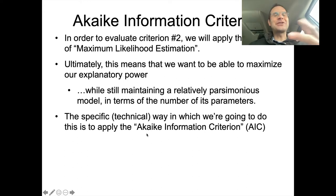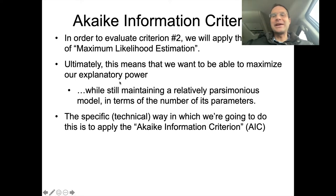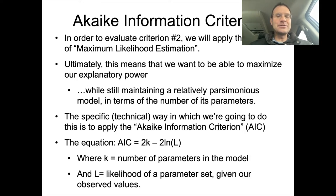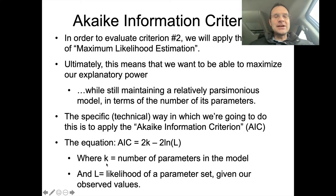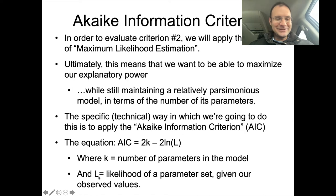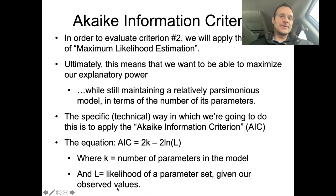The AIC is defined as: AIC equals 2 times K minus 2 times the natural log of big L. K here equals the number of parameters in the model — that one's pretty simple, just count them. L gets quantified in a much more complex way. L equals the likelihood of a parameter set given our observed values. This gets a little bit Bayesian — it's kind of based on that conditional probability idea.